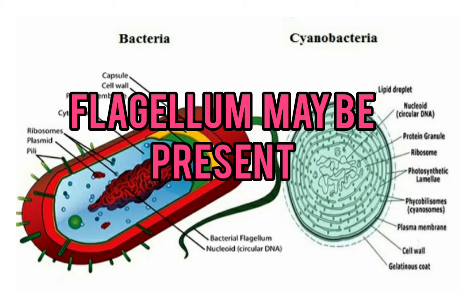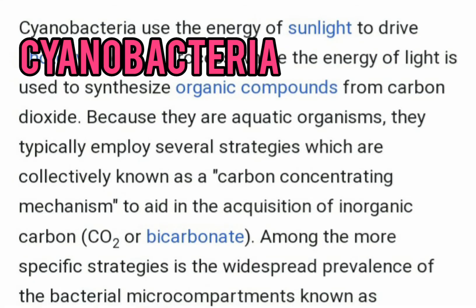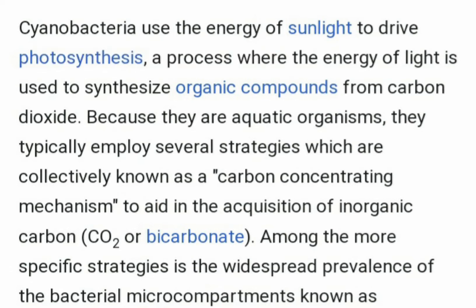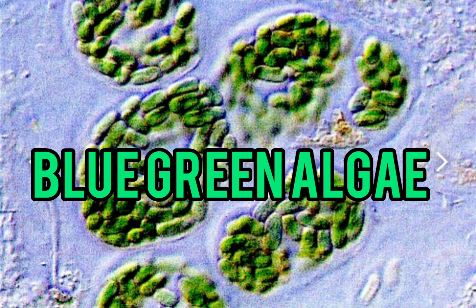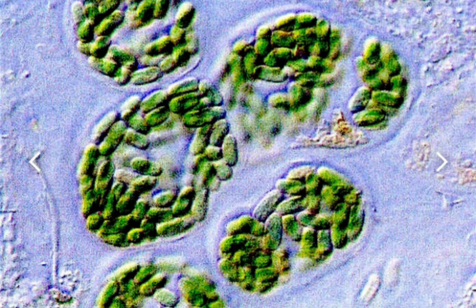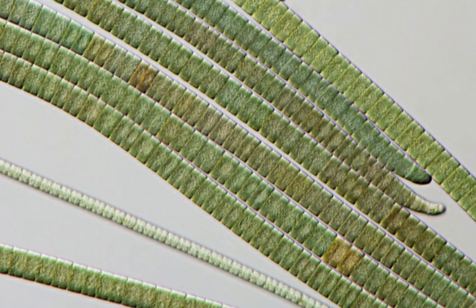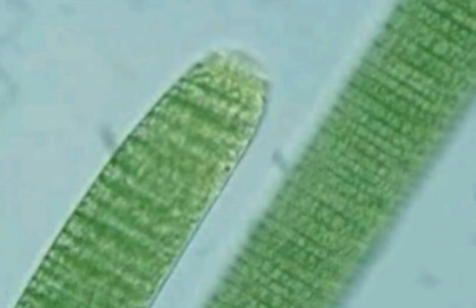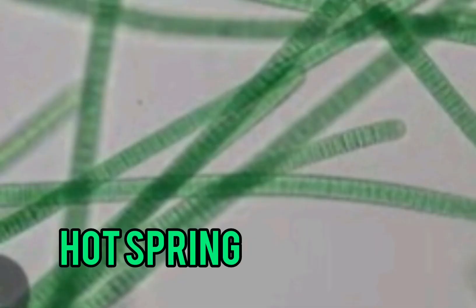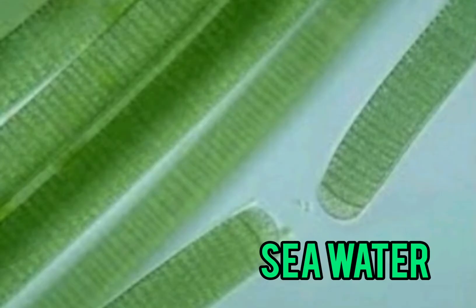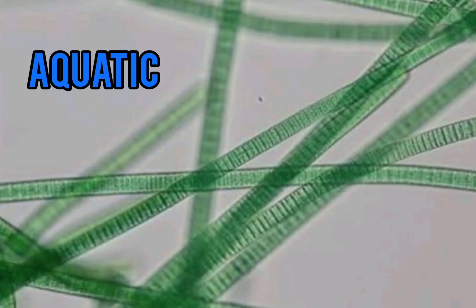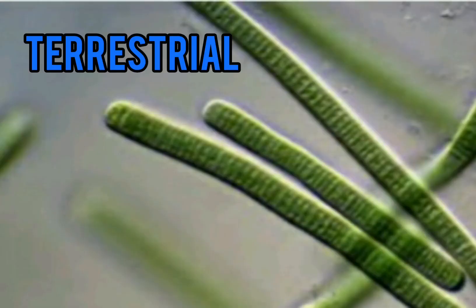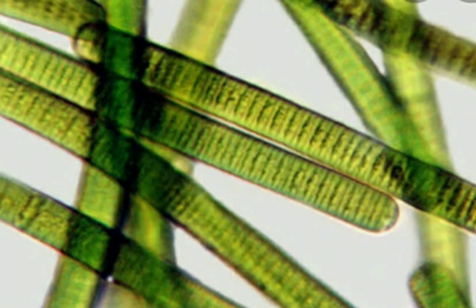First, let's discuss cyanobacteria. They are members of this group and have characteristics similar to bacteria. They are also known as blue-green algae. Examples include Nostoc, Oscillatoria, and Spirulinum. This type of bacteria can survive in a wide range of habitats like hot springs, seawater, and polluted water. They are predominantly aquatic, but many species are also terrestrial and can even grow in minimal moisture conditions.